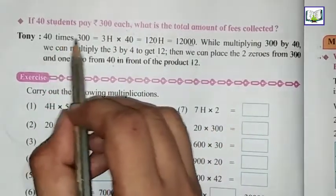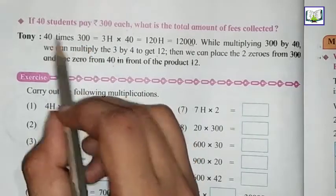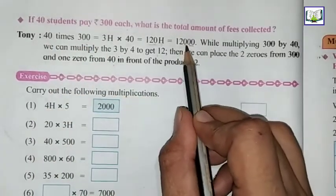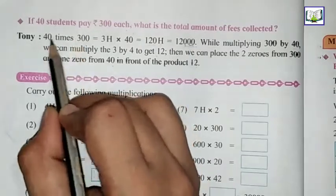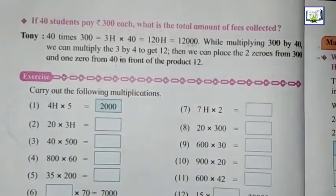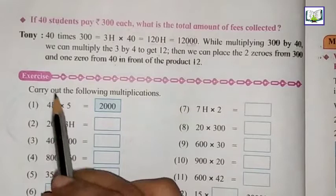While multiplying 300 by 40, we can multiply 3 by 4 to get 12, and write the zeros as it is. Then we can place the 2 zeros from 300 and 1 zero from 40 in front of the product 12. So whenever you see a question, check how many zeros: 1, 2, 3. So at the end, 3 zeros should come as it is. Then multiply the numbers and we will get the answer. These are some small tricks.